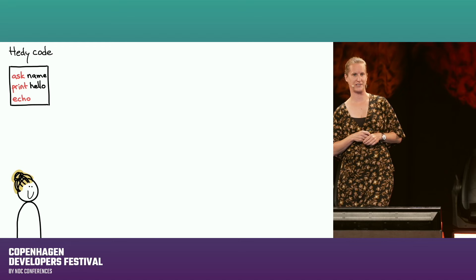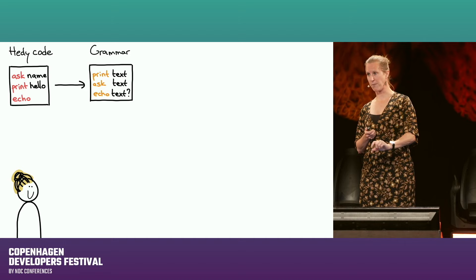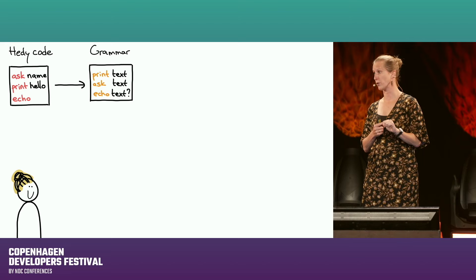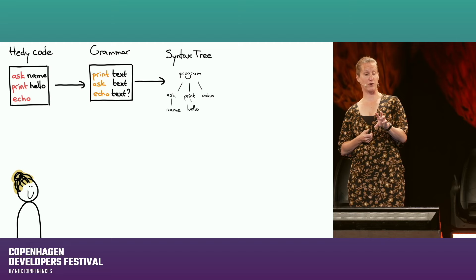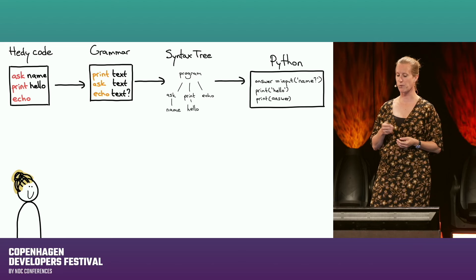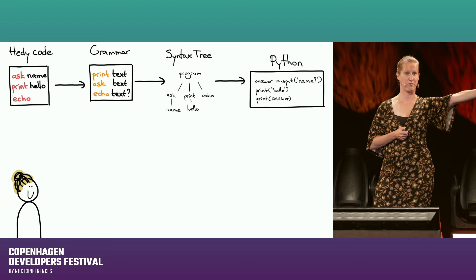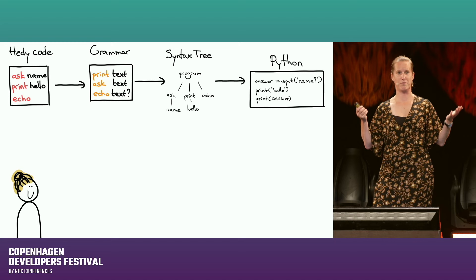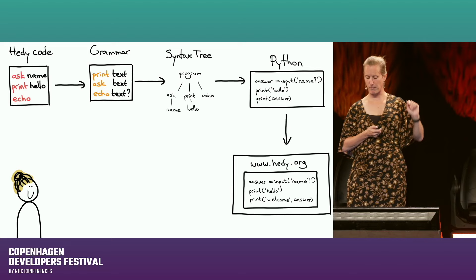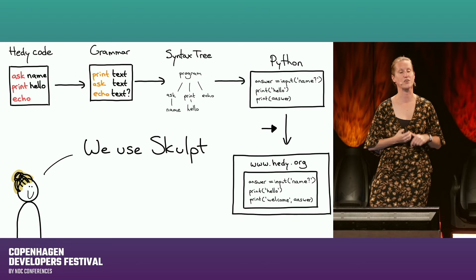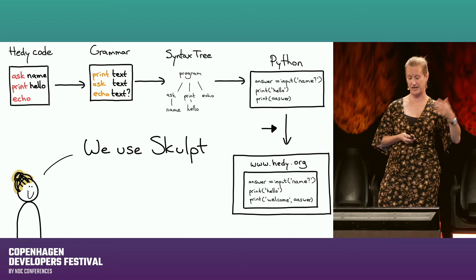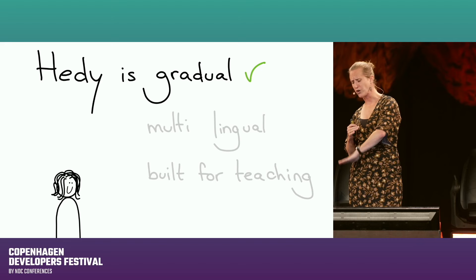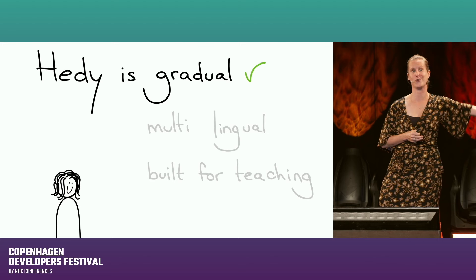Let's talk about how Hedy works internally. We have the Hedy source code, then a grammar describing what the language looks like — print followed by text, or ask followed by text. From that grammar and code, we parse into a parse tree representing the program's structure. Then we convert Hedy to Python — conceptually we add the brackets and quotes. Since it runs in the browser, we use Lark as our parser framework, and Skulpt — a reimplementation of Python in JavaScript — to run the generated Python in the browser. These tools will be relevant later.